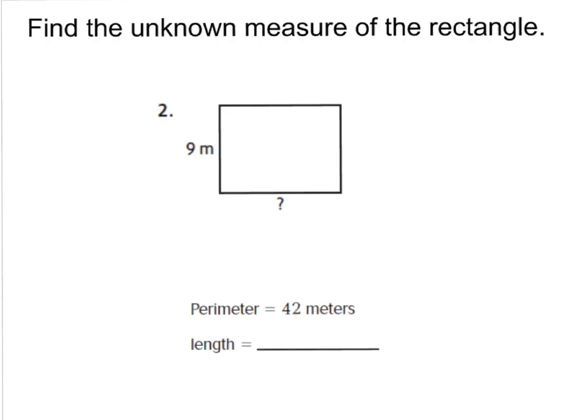Number 2 says find the unknown measure of the rectangle. They told us the perimeter is 42 meters. To find the perimeter it's length plus width plus length plus width — adding up all sides. They gave us 9 meters for the width, and since it's a rectangle, the opposite side is also 9 meters. So 9 plus 9 is 18, and between the two widths I have 18 so far.